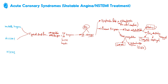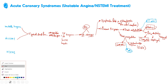How long do you continue these treatments? For anticoagulation, you typically do it for about 48 hours. For the dual antiplatelets, you continue for at least one year — if there's no reason to stop. Even if they get a stent, the same indication applies — at least one year. Afterwards, you can continue aspirin for life.